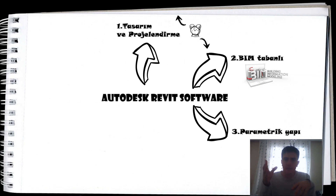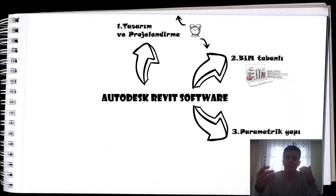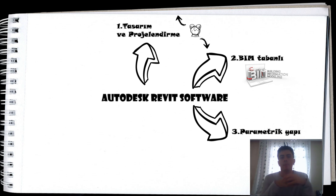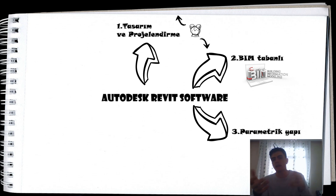Revit'in parametrik yapısı vardır. Parametrik yapıdan bahsedince Family'den bahsetmek gerekir. Family, AutoCAD ile kıyaslandığında blok mantığına benzer ama bambaşka bir mantıkta çalışır; bu da parametrik yapısı sayesinde gerçekleşir. Parametreler modeldeki tüm öğeler hakkındaki bilgileri depolar ve iletir. Aynı zamanda ölçüler ve geometriler bağlantılıdır; ölçüyü değiştirince geometri, geometriyi değiştirince ölçü de değişir.